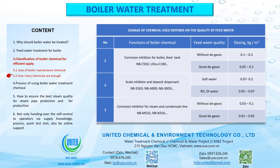The following table shows dosage of chemicals depending on feed water quality. 1. Function: Corrosion inhibitor for boiler feed tank — NBC 503, Ultra C100. Feed water without degassing: dosing 0.1 to 0.3 kg/m³. Feed water with good degassing: dosing 0.05 to 0.1 kg/m³.